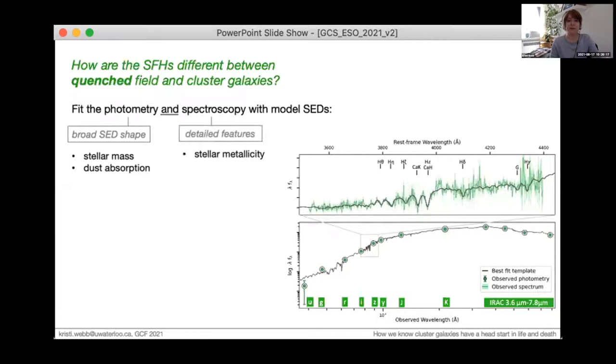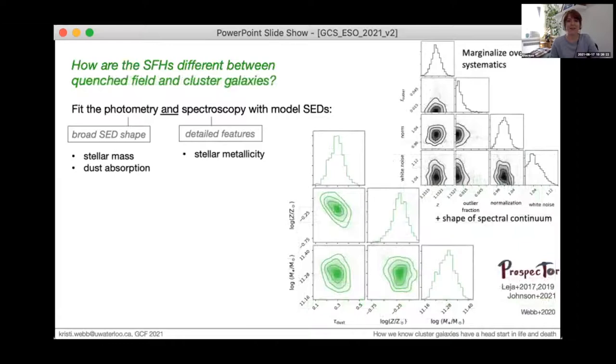We use the modular galaxy stellar population inference code, Prospector, to perform Bayesian forward modeling and Monte Carlo sampling of the parameter space, which gives us posteriors for the galaxy properties and observational systematics.